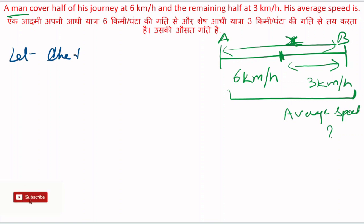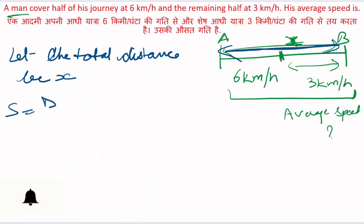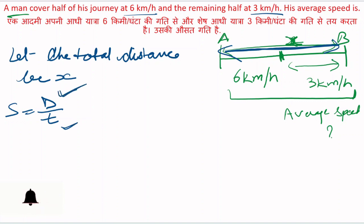Let the total distance be x. If we look at total distance x — speed is equal to distance by time. Speed is equal to 6 km per hour and 3 km per hour. Distance is equal to x. Time is equal to: half journey time, and next half time.